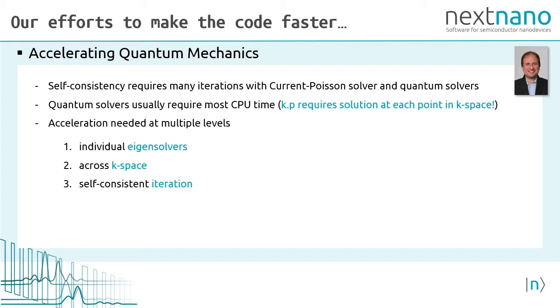The self-consistent solution of the current Poisson equations and the Schrödinger equations is very time consuming. Especially the quantum solver requires most CPU time. For k dot p, we have to solve the Schrödinger equation at each point, at each k point in k-space. So we have to accelerate quantum mechanics at three levels: first the eigensolvers, then across k-space, and then within the self-consistent iteration.